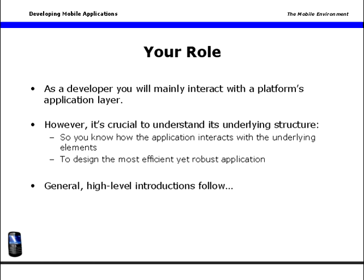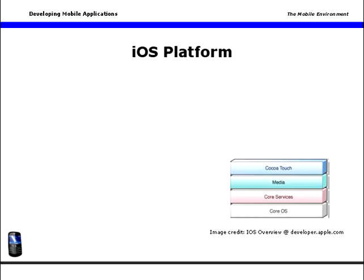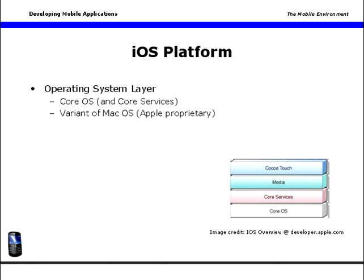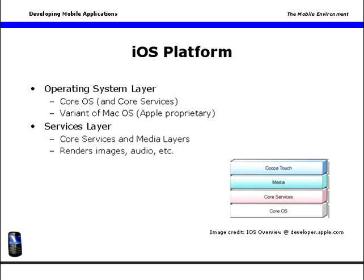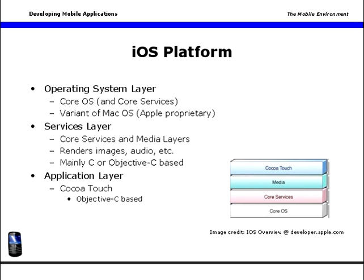Let's discuss the platforms themselves in a little bit of detail. First, Apple's iOS, which powers the iPhone and the iPad. At the operating system layer, its core OS is a variant of Apple's proprietary operating system, which is also used to power the Mac. At the services layer, iOS offers core services and media functions, which is where it does things like rendering images, producing audio, and other such things. At this layer, iOS is mainly written in Objective-C, a variant of the C programming language. At the application layer, iOS devices run on an Objective-C based platform known as Cocoa Touch. The software kit you'll use to code iOS is known as the Xcode IDE, or Integrated Development Environment. Note that Xcode and iOS developer tools only run stably on Mac OS platforms, which generally means you'll need a Mac system running an Intel processor and the latest version of Apple's operating system.